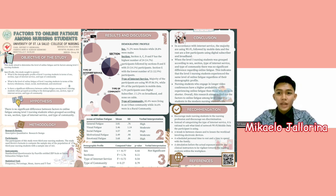Moving on, we have the statistical tools. For problem one, frequency and percentage was used to determine sex, educational attainment such as the year level, type of internet service, and type of community. For problem two, mean was used to determine level of online fatigue such as general, visual, social, motivational, and emotional fatigue. For problem three, with the profile variables of sex, section, type of internet service, and type of community, ANOVA and T-Test were both used to determine the significant difference of online fatigue.